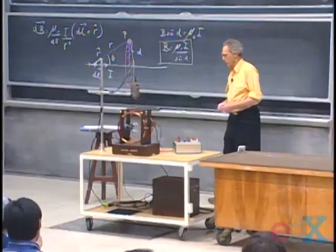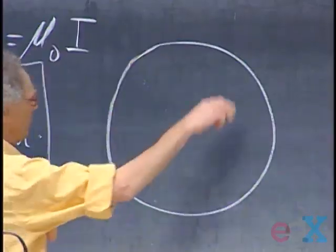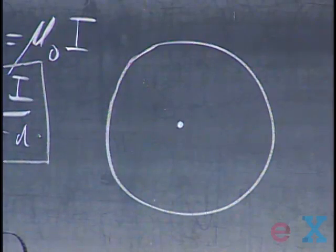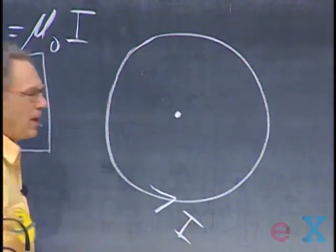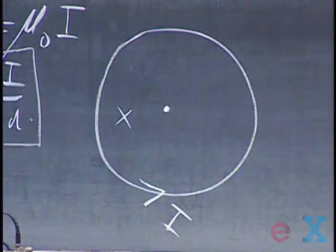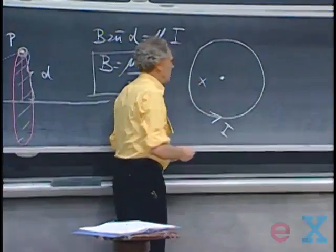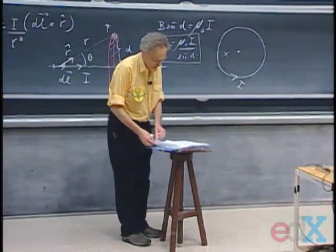There is one particular problem whereby Ampere's law will fail, because Ampere's law in general works when we have cylindrical symmetry. There's one problem where Ampere's law bitterly fails and where Biot-Savart is highly superior. If you have a conducting circular loop carrying current I and you're asked for the magnetic field right at the center, Biot-Savart will immediately give you the answer. Ampere's law won't work.